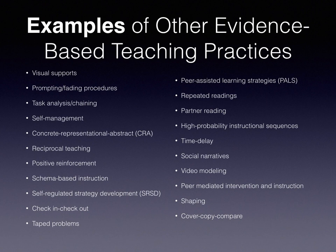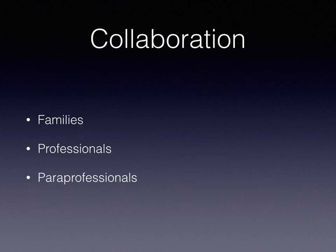These are just examples to show that there are always things you can find more information about to address student needs. The final component of quality inclusive classrooms is ongoing collaboration among the teachers in the classroom, the families of students, other professionals supporting the student, and any paraprofessionals involved.